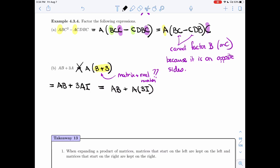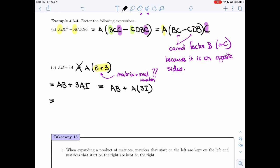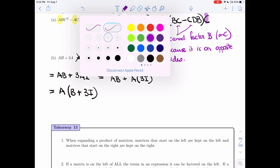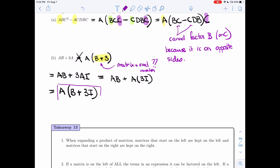And now at this point, my A is on the left of both terms. And so I'm going to take A... The A comes out, so I get B plus 3I. And that's the matrix factor that I will get. So that's how I would factor it.